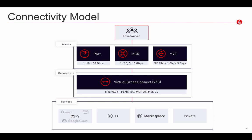VXCs are virtualized layer 2 connections over our private backbone, and they're available in minutes. Off of each MVE, you can deploy up to 24 VXCs, providing you the control to consume what you want, when you want.